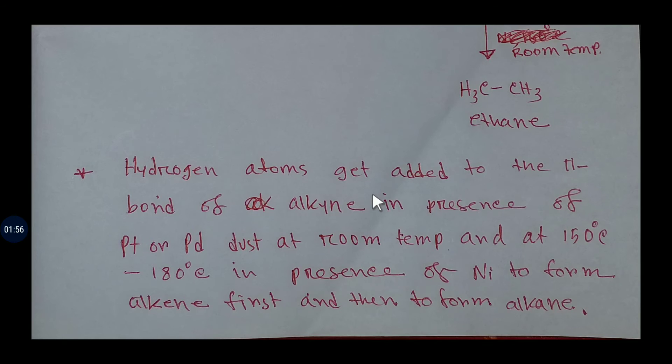Here is the language of this reaction. Hydrogen atoms get added to the pi bonds of alkyne, that is ethyne, in presence of platinum or palladium dust at room temperature. On the other hand, at 150 degree Celsius to 180 degree Celsius temperature in presence of nickel to form alkene first and then to form alkane.